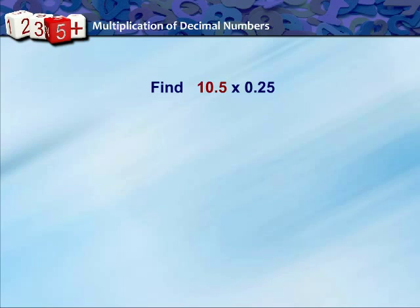Let us find now 10.5 into 0.25. First multiply 105 with 25. We get 2625. Now, in 10.5 there is one digit after decimal point and in 0.25 there are two digits. So, total is 3. So, from right most digit 5 in 2625 move three places towards left. So, we get 2.625. So, the answer is 2.625.